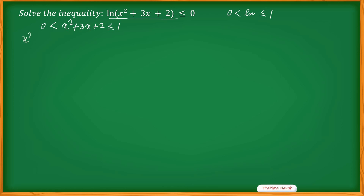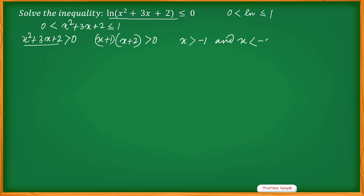x² + 3x + 2 > 0. If I factorize this, it gives me (x + 1)(x + 2) > 0, and the solution is: x > -1 or x < -2.